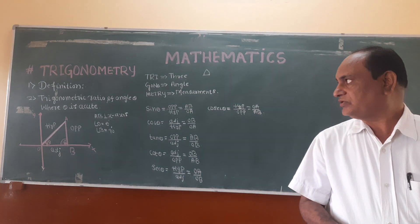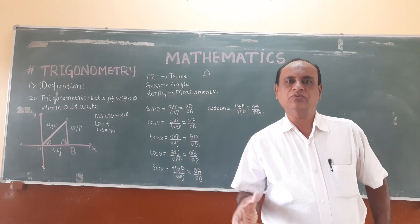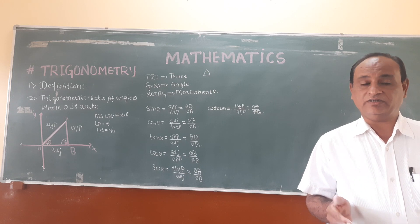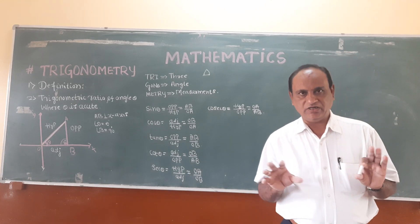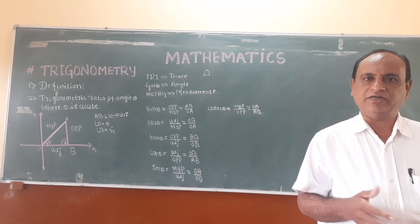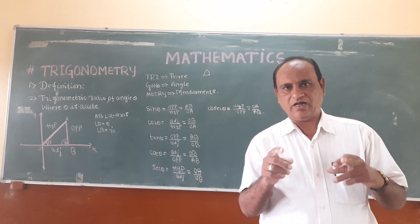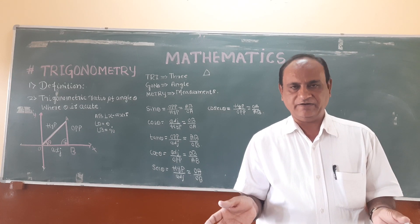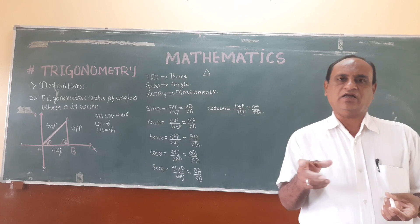The second point is trigonometric ratios of an angle theta, where theta is an acute angle. Trigonometry is a Greek language word standing for Tri, Gono, Metri. Triangle measurement is the Indian language meaning. Trigonometry means three angle measurement, that is triangle measurement.